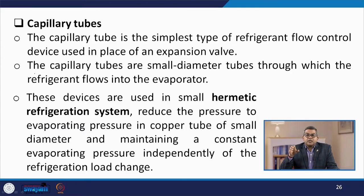The capillary tube is the simplest type of refrigerant flow control device, used in place of an expansion valve. Capillary tubes are small diameter tubes through which the refrigerant flows into the evaporator. These devices are used in small hermetic refrigeration systems to reduce the pressure to evaporating pressure in a copper tube of small diameter, maintaining a constant evaporating pressure independently of refrigeration load changes.